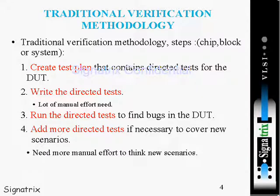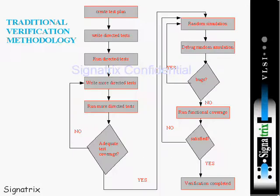We are going to discuss about the traditional verification methodology. We have discussed enough about this before, but we will recap. The traditional verification methodology can be performed at chip level, block level, and system level. The flow diagram of this traditional verification methodology covers 10 points, and if you look at that flowchart you will get a clear picture of how the traditional verification methodology flows.